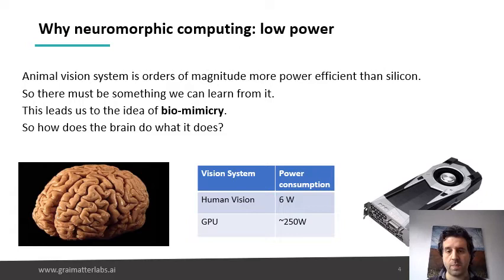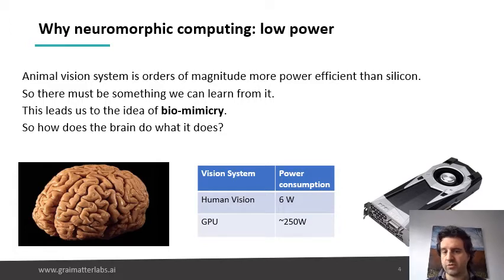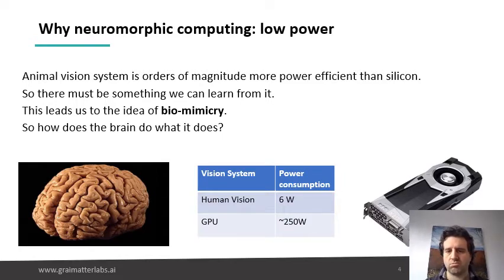If we look at how the systems of the brain work, they actually are extremely low in power consumption compared with the processors that we design. Our silicon cannot even get close to the levels of power consumption that we get from a biological brain. So if we compare, for instance, a human vision system — the part of your brain that processes visual information — and compare that with how much we spend doing the same thing on a CPU, you get almost two orders of magnitude of difference.